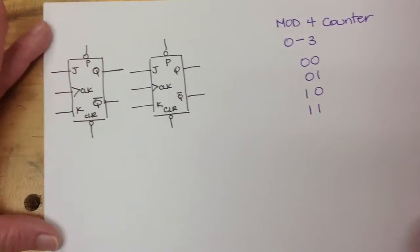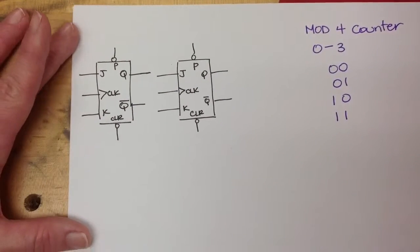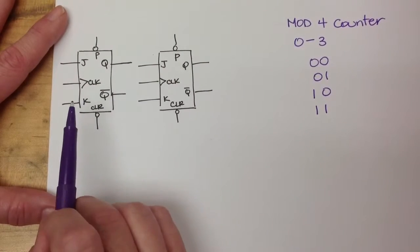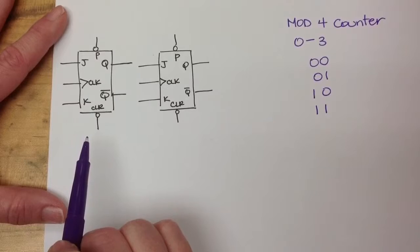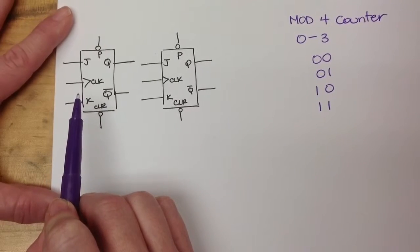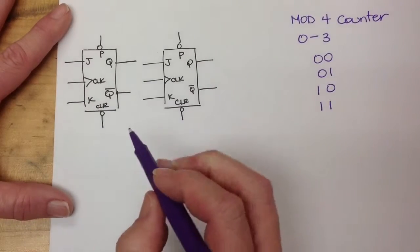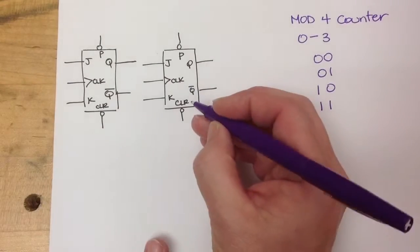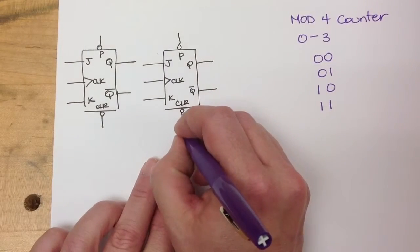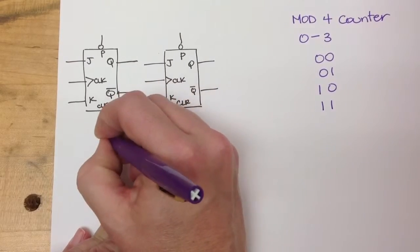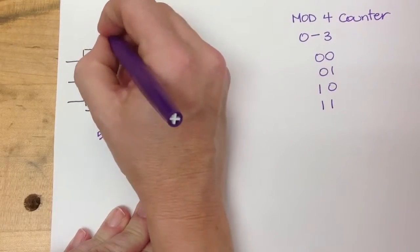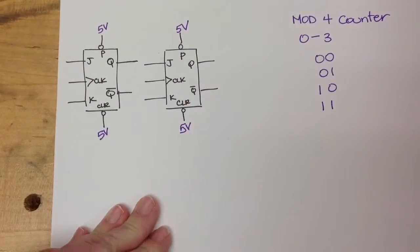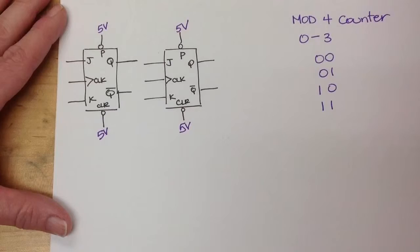So how would we make this out of JK flip-flops? So I've used the JK with the asynchronous preset and clear, and it has a positive triggered flip-flop. And how we're going to do this is we are going to tie preset and clear to 5 volts. They all have the bubble on them, so they're active low. So when we tie them to 5 volts, we've just turned them off.